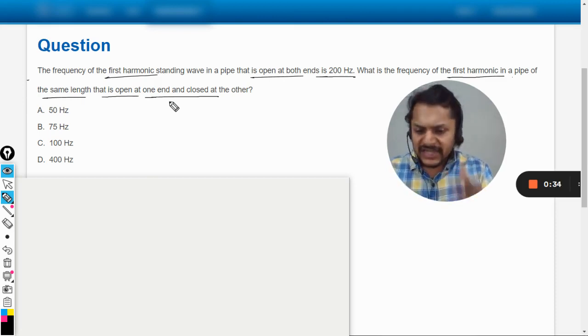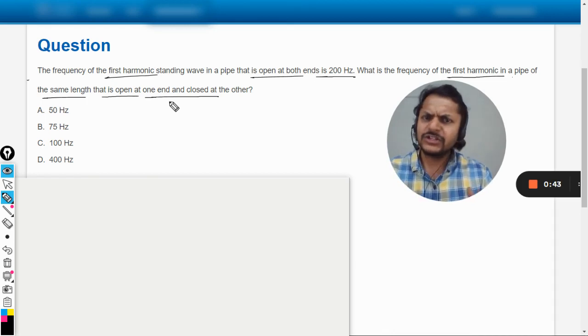First of all, what is a standing wave? A standing wave is a resultant wave which is created by the superposition of two waves which are actually the same waves, having the same wavelength or the same frequency. The only thing is that they're traveling in the opposite direction.